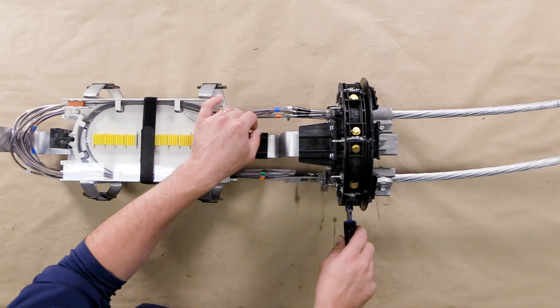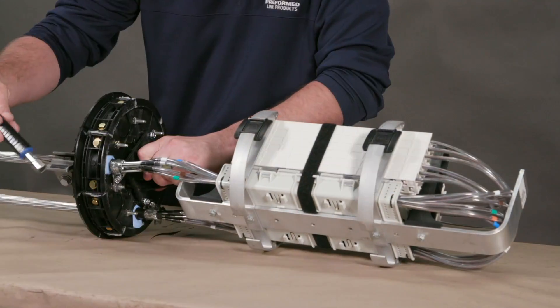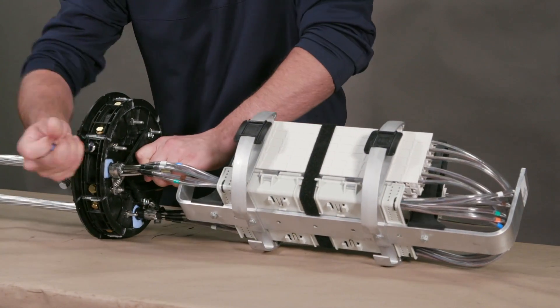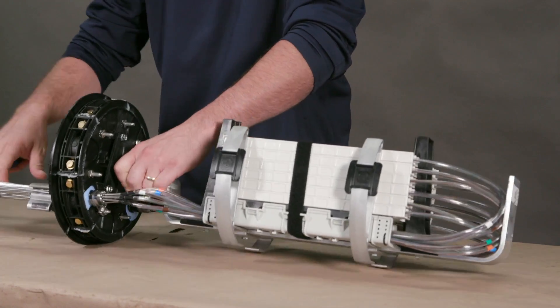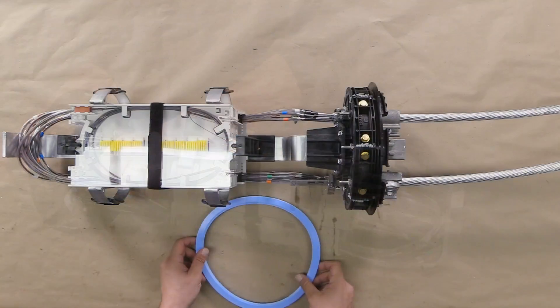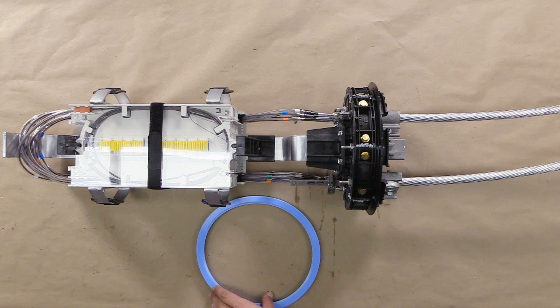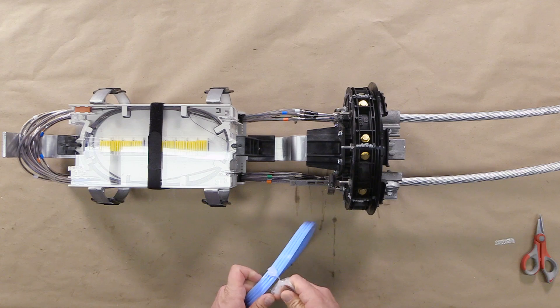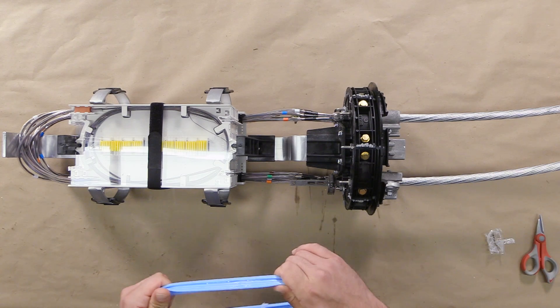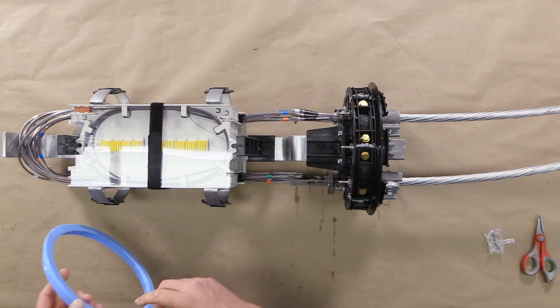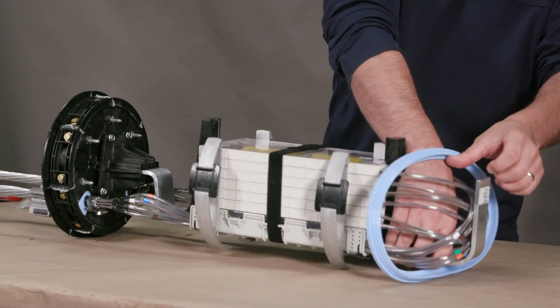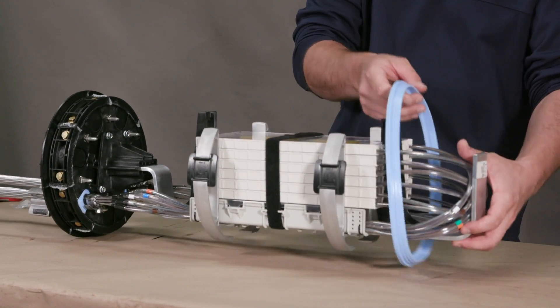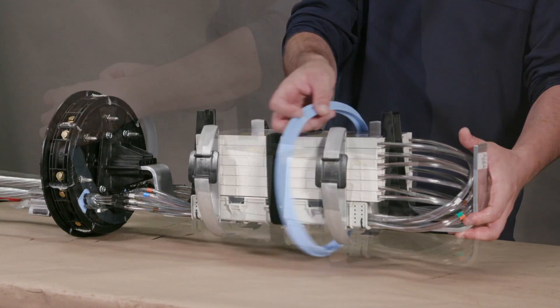Using a can wrench, tighten down all remaining end caps. Apply an even layer of silicone grease to all sides of the dome gasket. Install the gasket on the dome end plate. Ensure the gasket is properly seated in the channel.